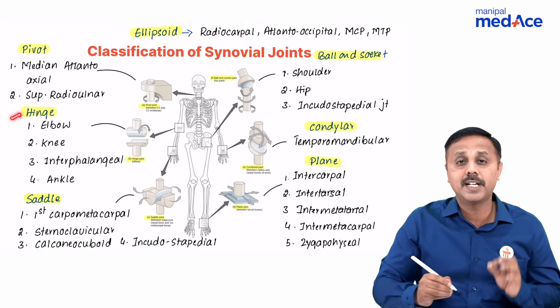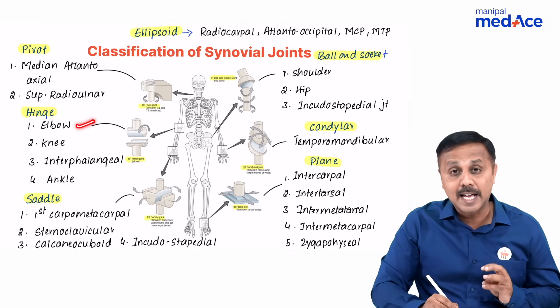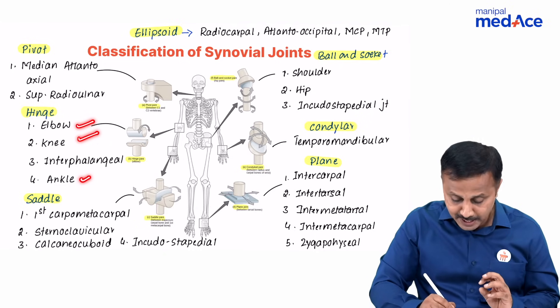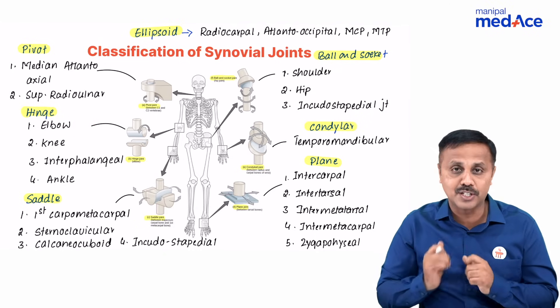When we come to the hinge joint, the best examples are the elbow joint, knee joint, ankle joint, and interphalangeal joints.